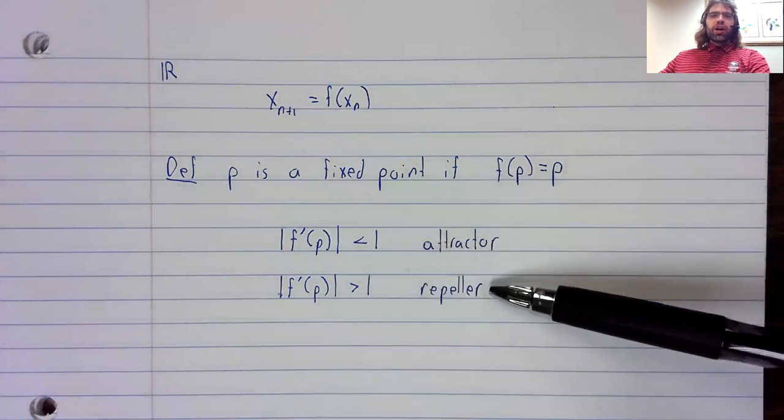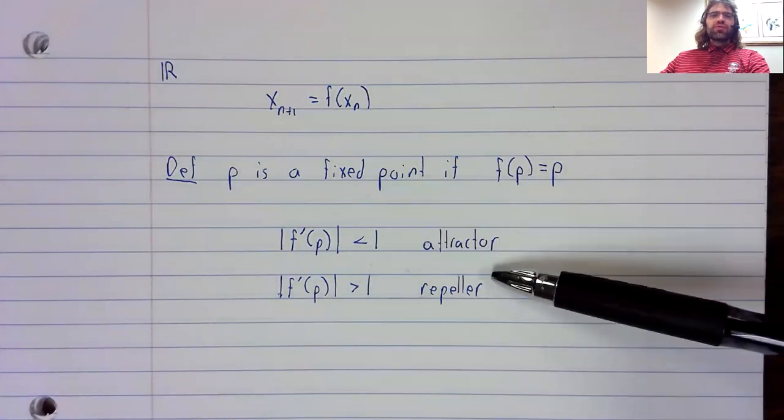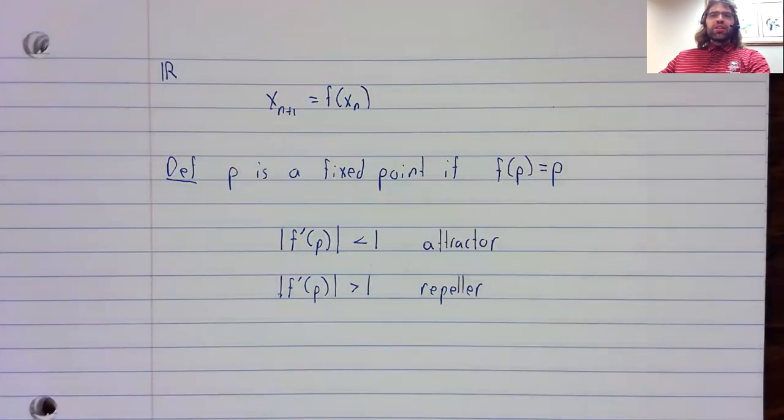then we cannot use this rule, and it's more difficult to know what happens at the fixed point. So there are similarities between dynamical systems and differential equations.